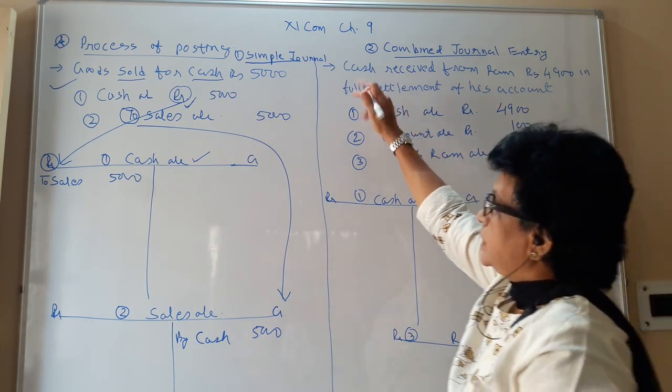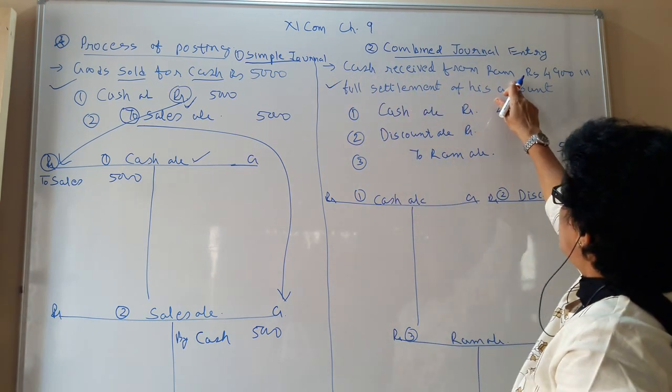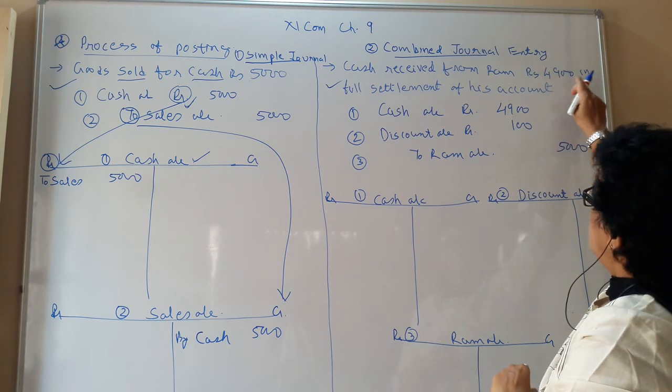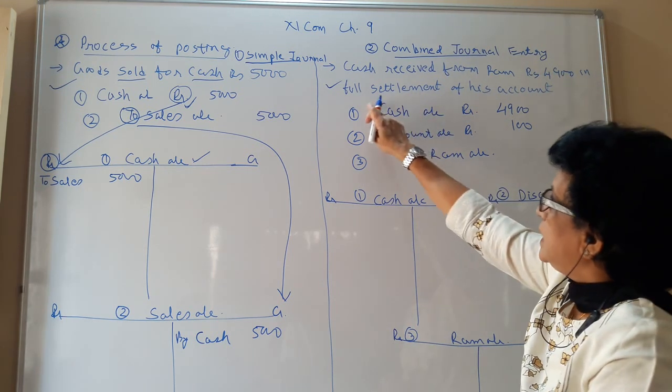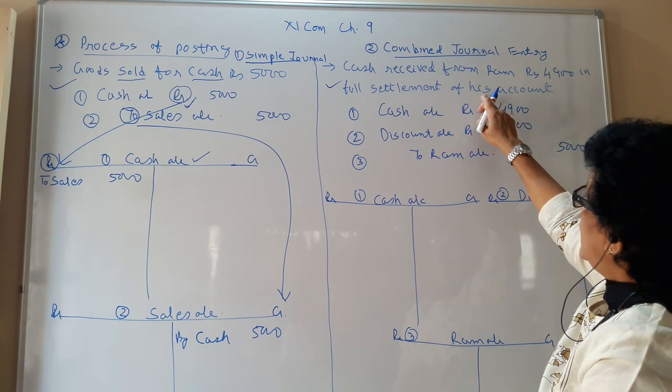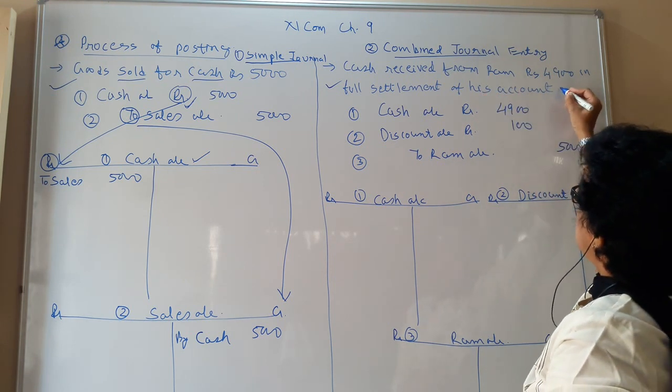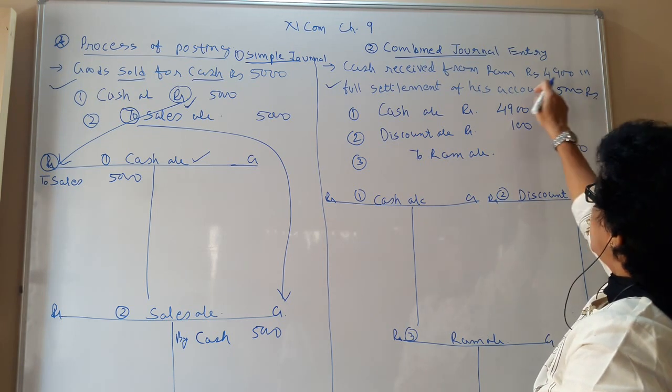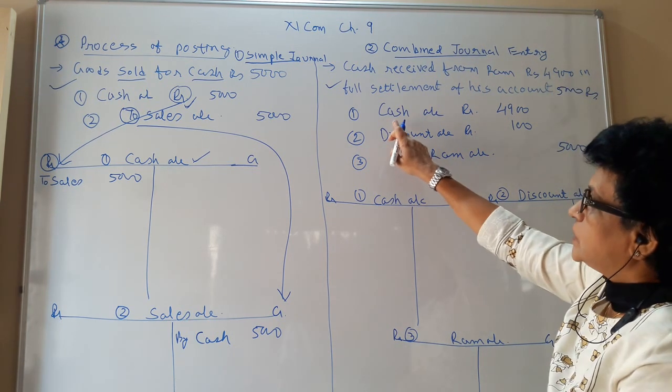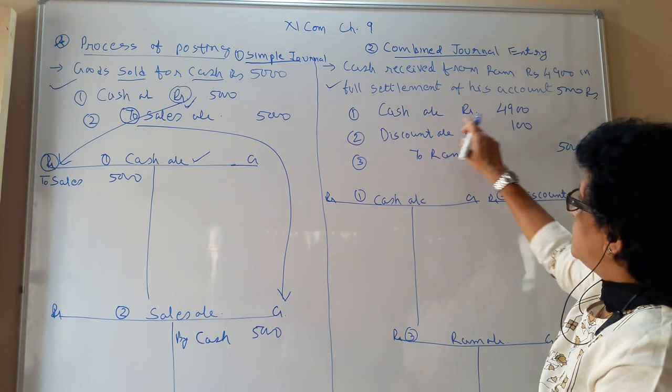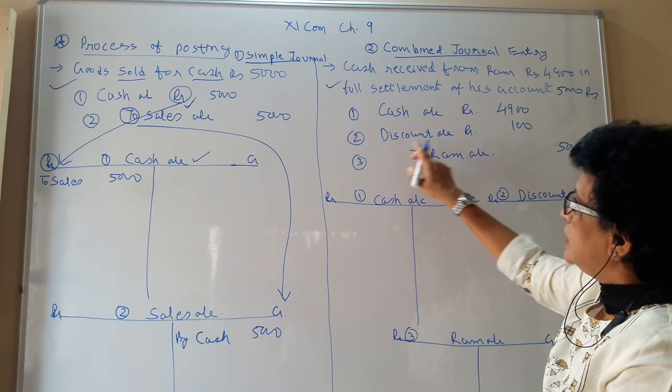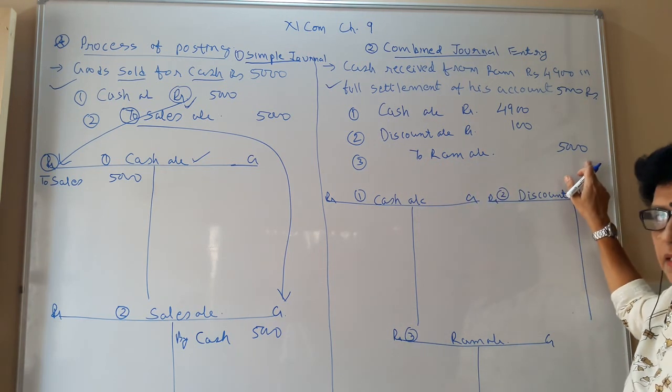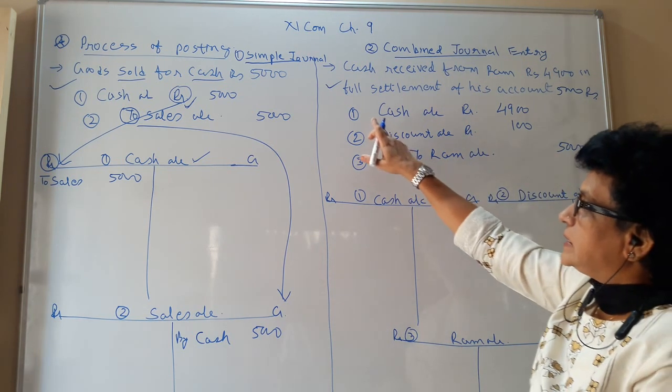The transaction for illustration: cash received from Ram. You have sold the goods to Ram earlier of rupees 4,900 in full settlement of his account. You have sold goods of rupees 5,000 to Ram. For that he is paying you 4,900. So the journal entry: cash comes in 4,900. Discount you are giving 100.